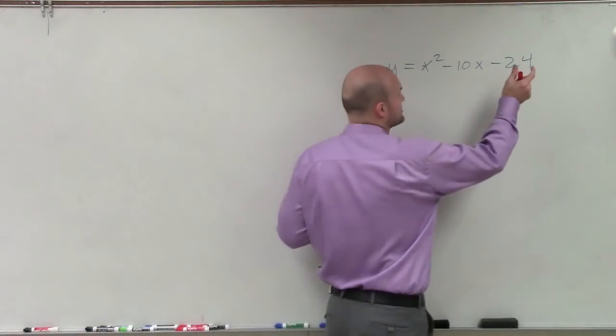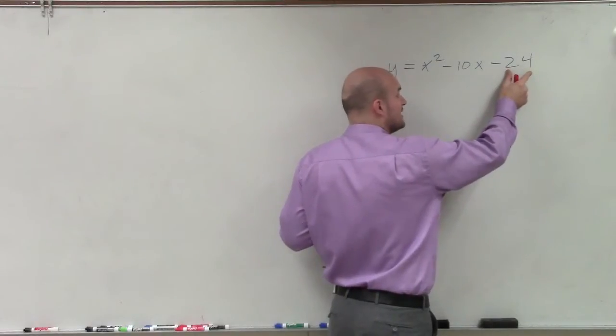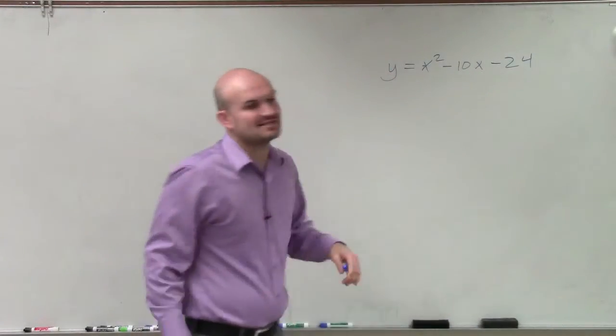So remember to solve by factoring, what we want to do is take the factors of negative 24, see what two factors multiply to give you negative 24, but then also add to negative 10.